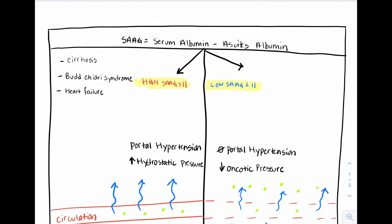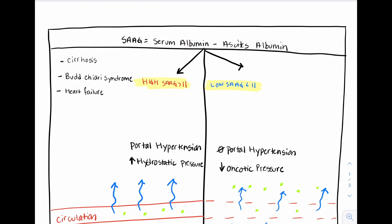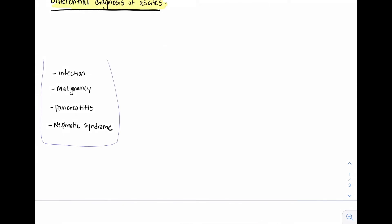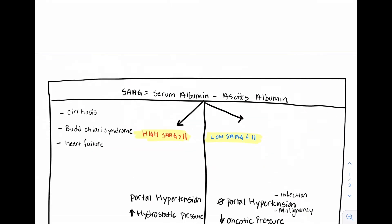A low serum ascites albumin gradient is commonly caused by things like infection, malignancy, pancreatitis, nephrotic syndrome, as well as others.